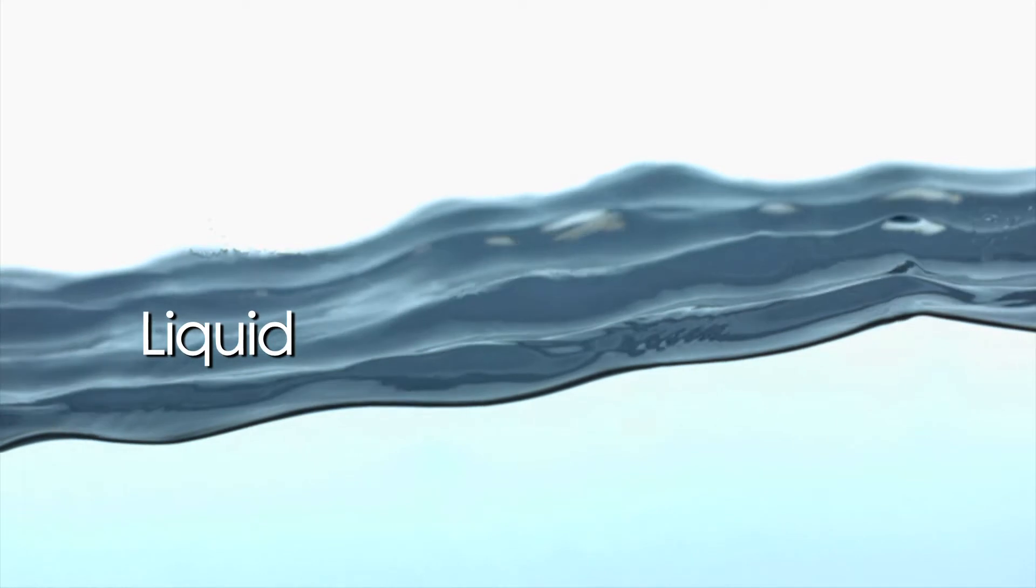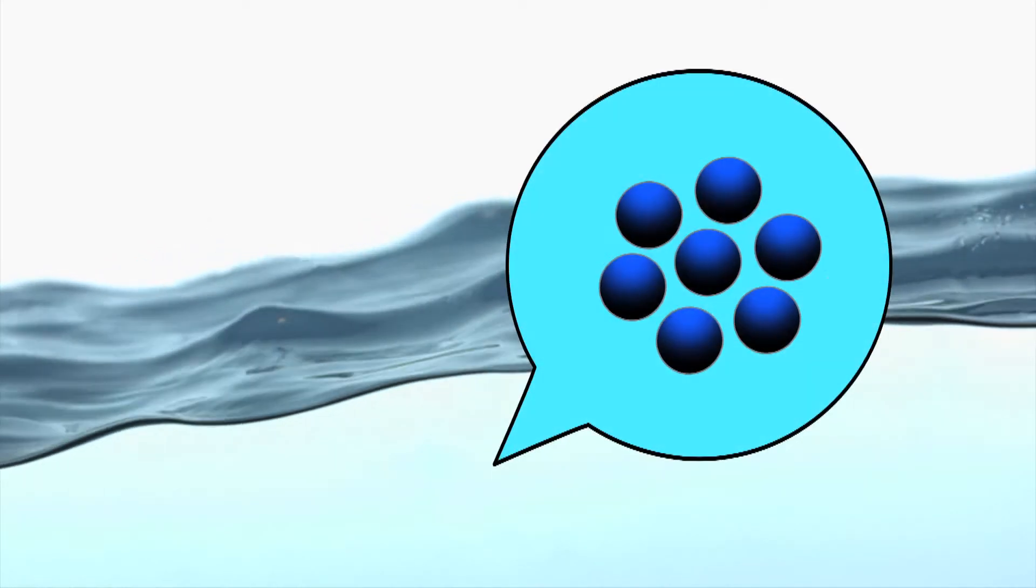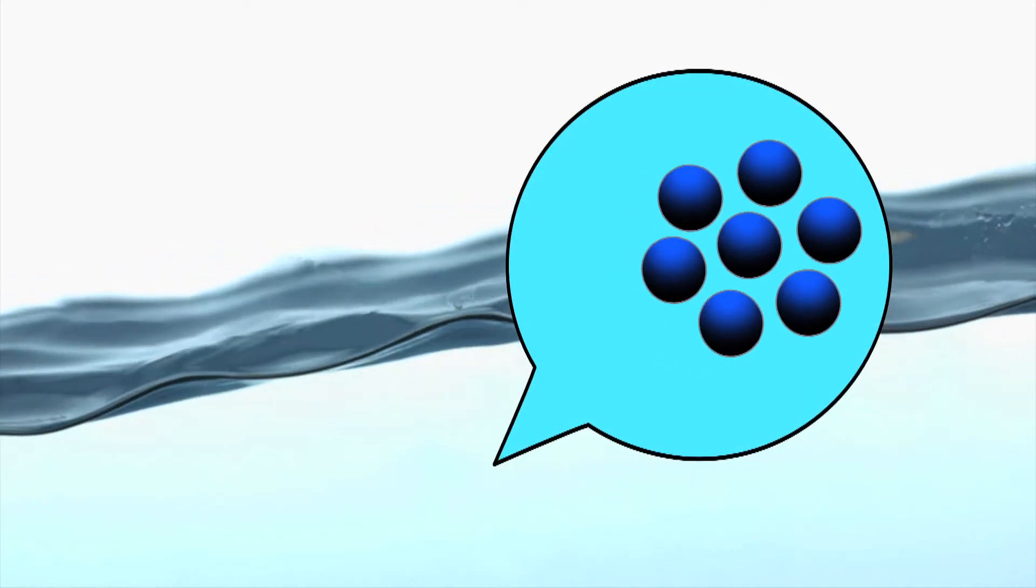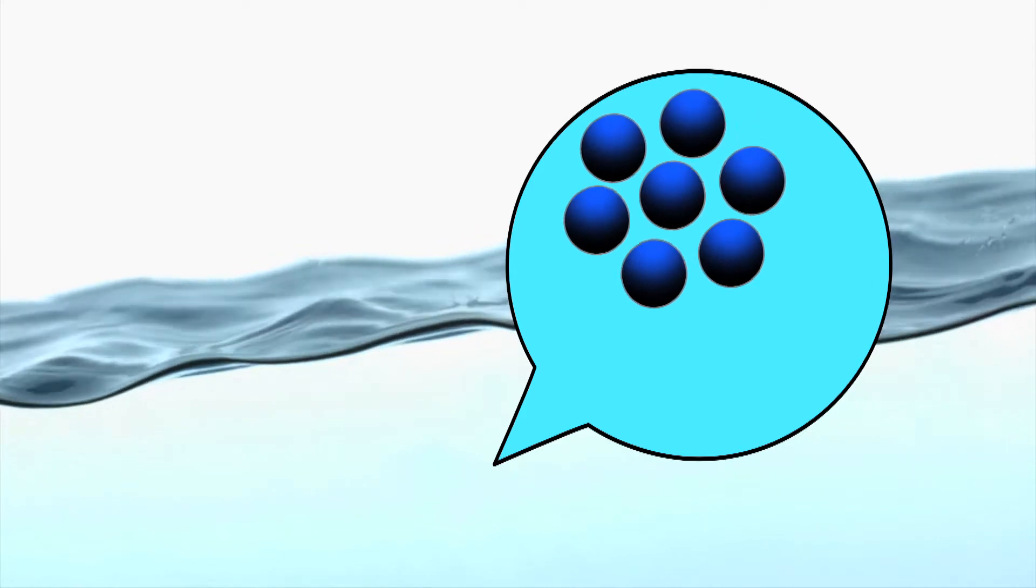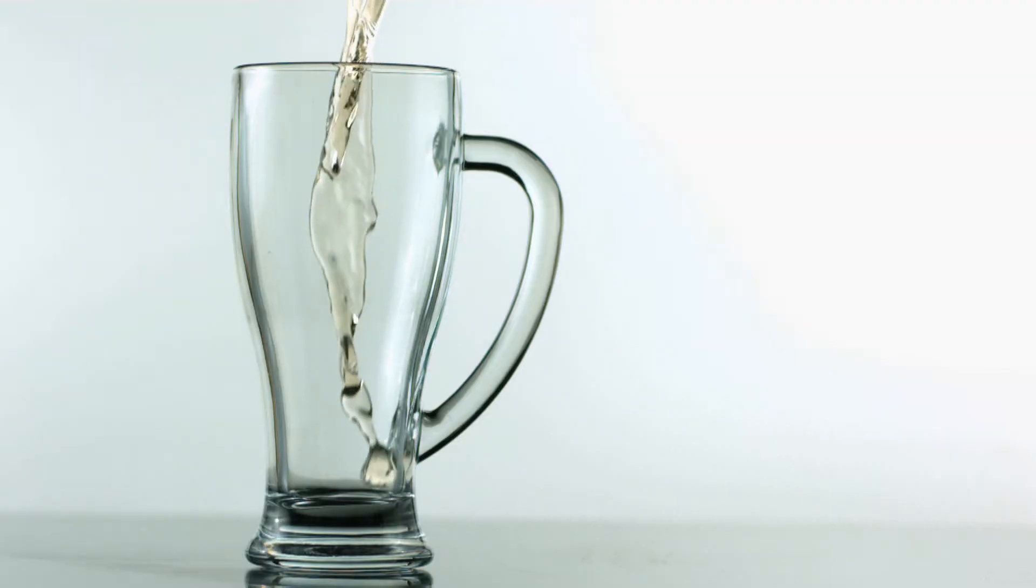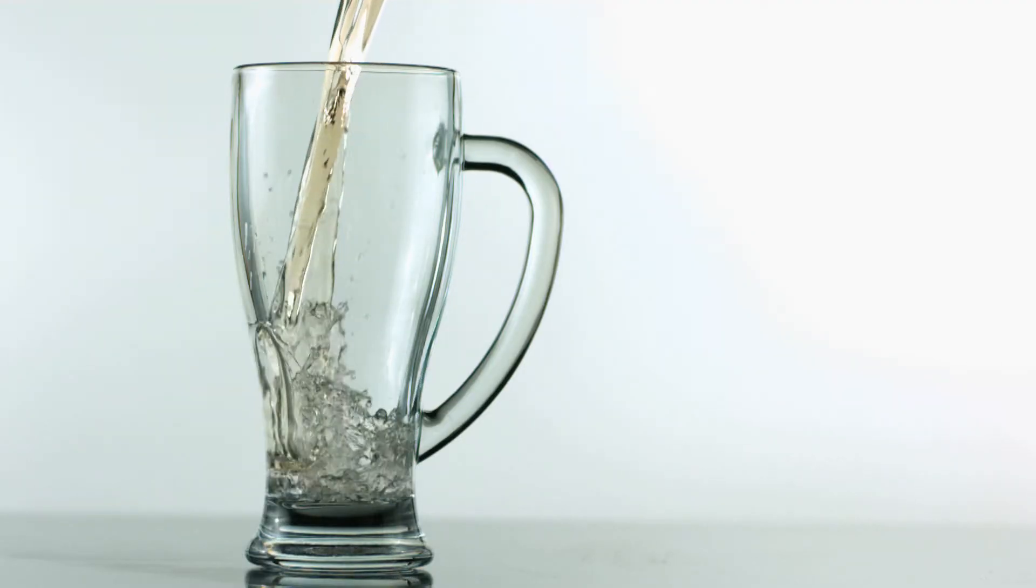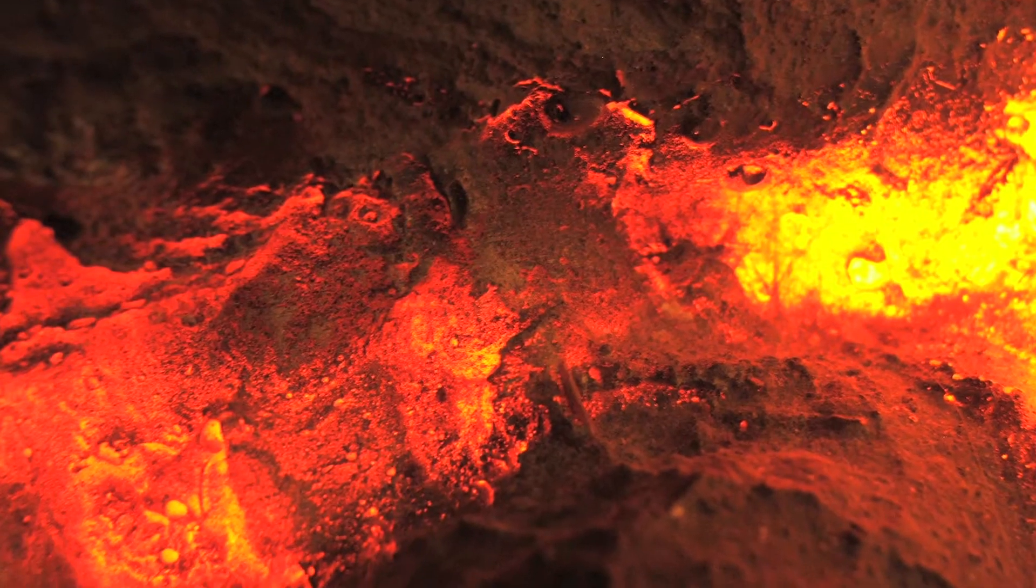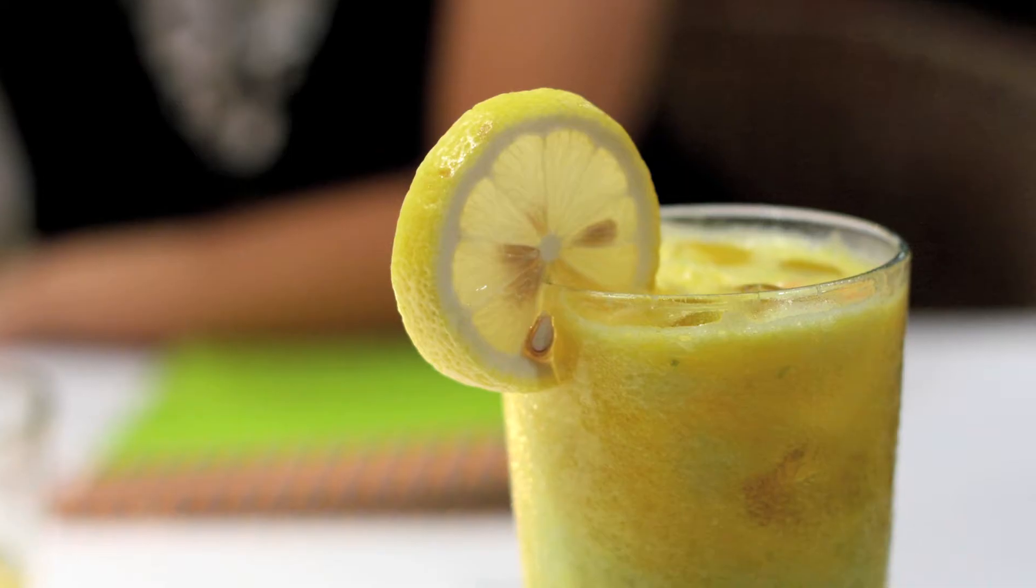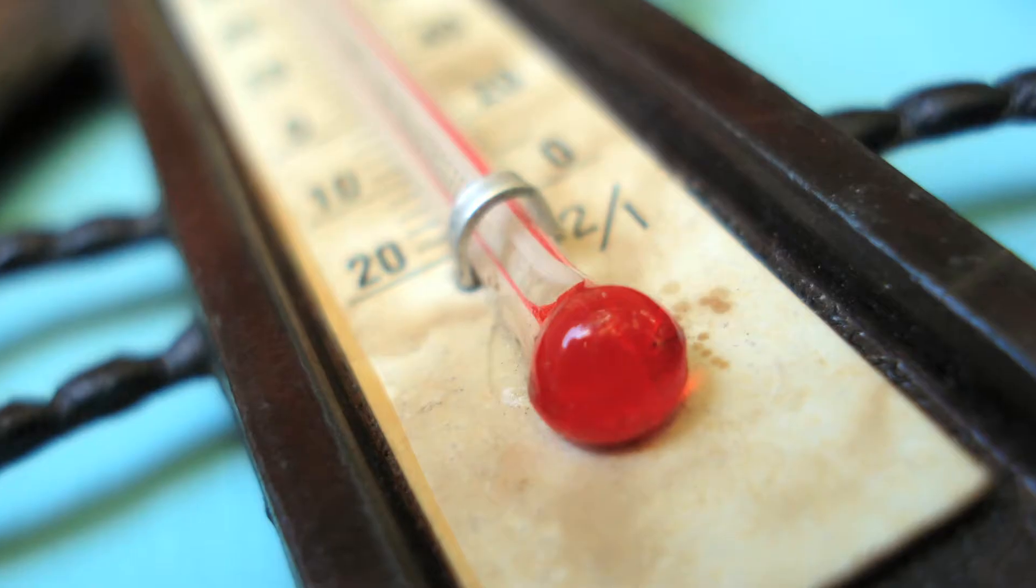The next state of matter is called liquid. A liquid occurs when molecules of an object are free to move around but still remain fairly close together. A liquid will be the same shape as the container that holds it, like water in a cup. Examples of liquids include lava, juice, and mercury.